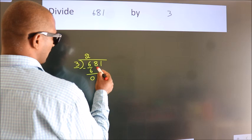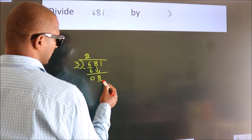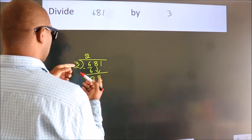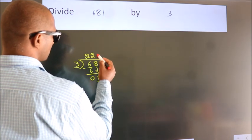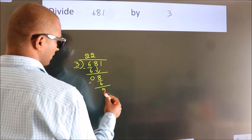After this, bring down the beside number. So, 8 down. A number close to 8 in the 3 table is 3 times 2, which is 6. Now we subtract. We get 2.